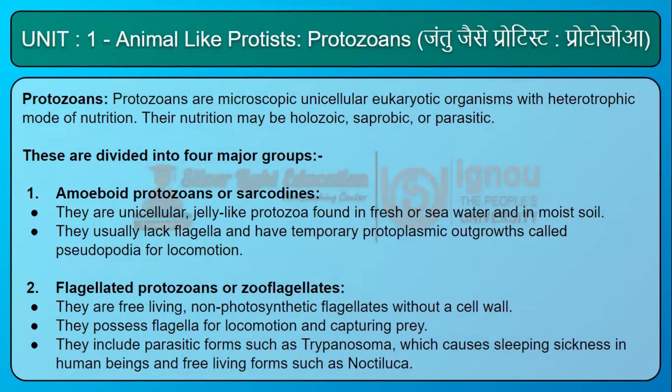These are divided into four major groups. First, amoeboid protozoans or sarcodines. They are unicellular, jelly-like protozoa found in fresh or sea water and in moist soil. They usually lack flagella and have temporary protoplasmic outgrowths called pseudopodia for locomotion.